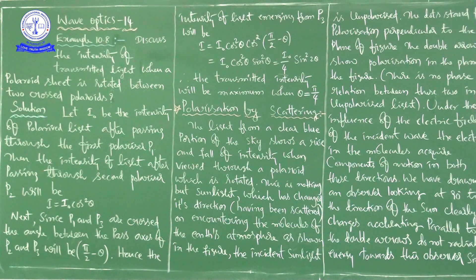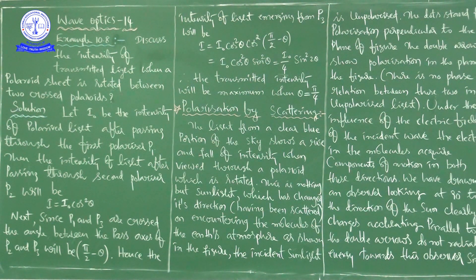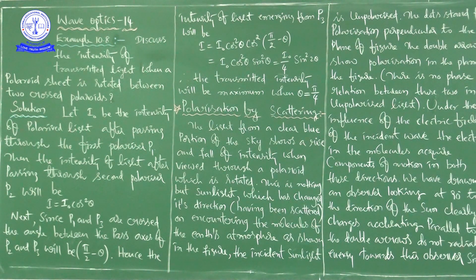In connection to this problem, in our last class we focused on what is polarization and what happens to polarized light — what is unpolarized light, what is polarized light, and in that what is plane polarized light. And what is a transverse wave, because light is a form of electromagnetic wave.